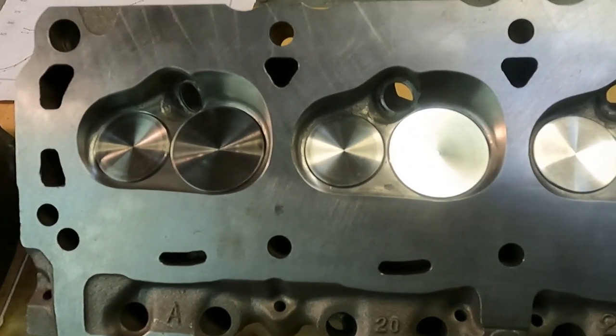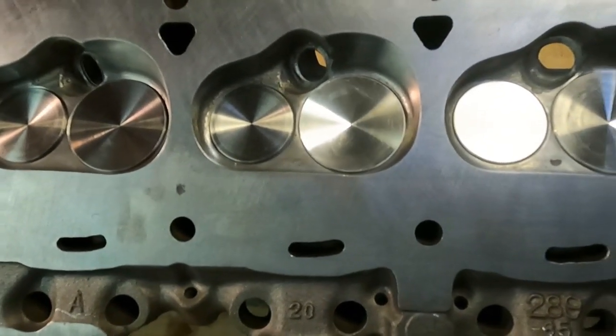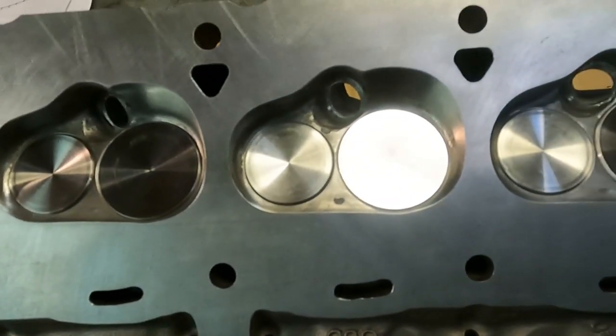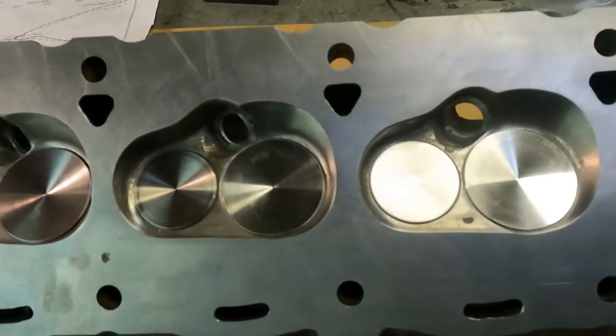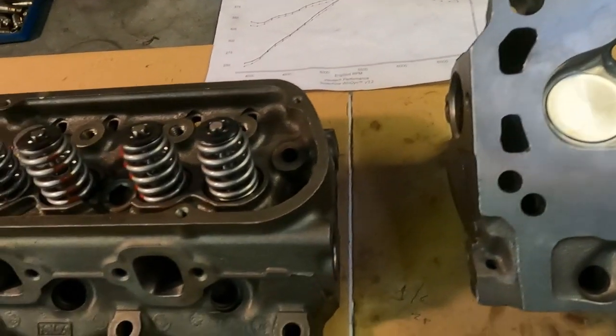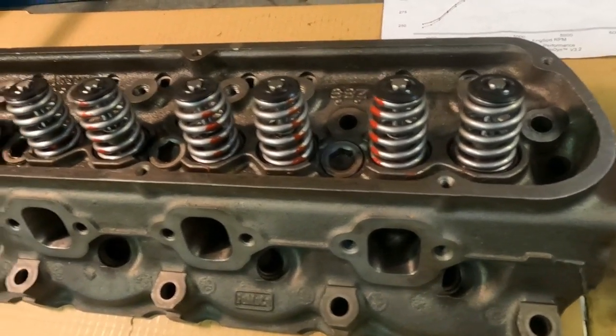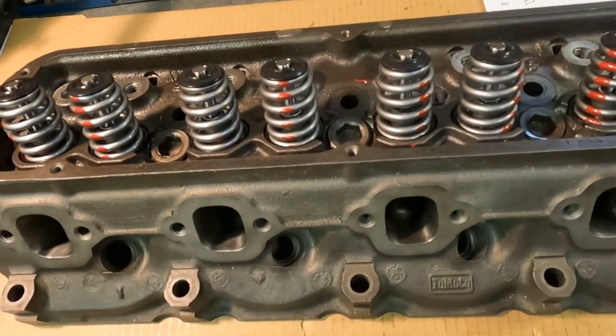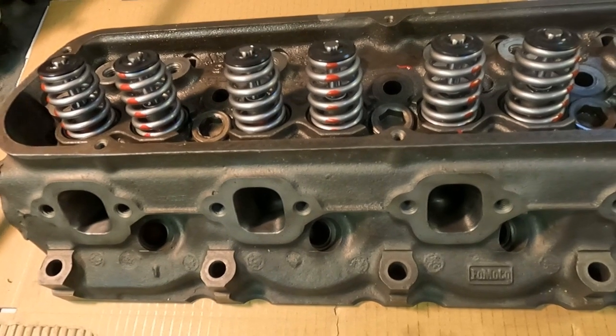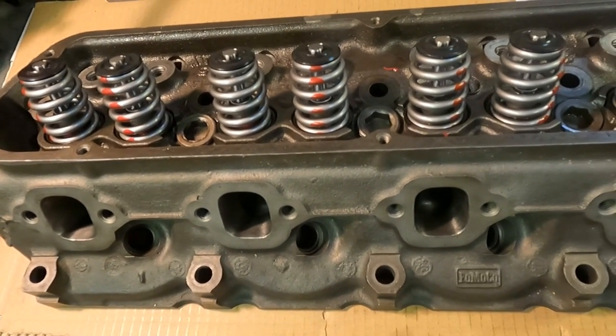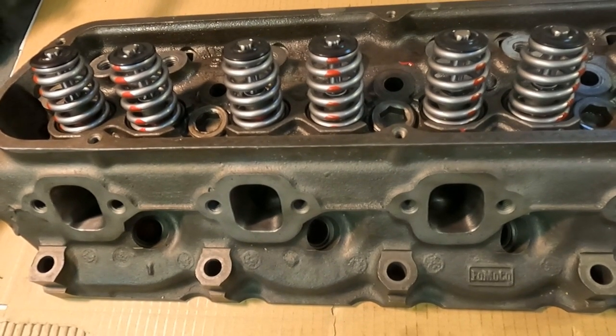Hey guys, we're here with part 4, wrapping up our 289 project. You can see they're assembled here. We got our 1.900/1.55 valves, a nice set of beehive springs, Comp Cams retainers, Crower keepers, nice stuff. The installed height came out at 1.770, so we've got them set up at about 140 pounds on the seat and they're going to be about 325 open.